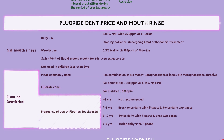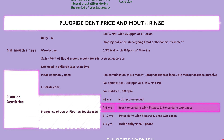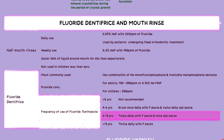The recommended frequency of fluoride toothpaste use by age: under 4 years — not recommended; 4 to 6 years — brush once daily with fluoride toothpaste and twice daily without toothpaste; 6 to 10 years — brush twice daily with fluoride toothpaste and once daily without toothpaste; above 10 years — brush 3 times daily with fluoride toothpaste.